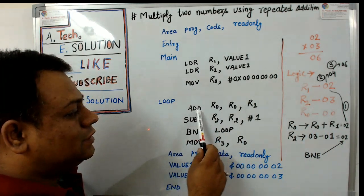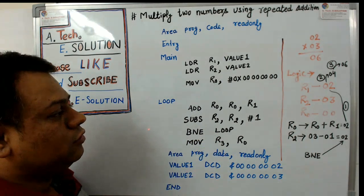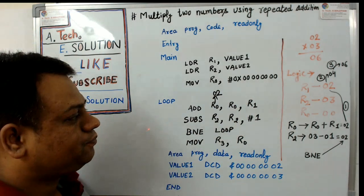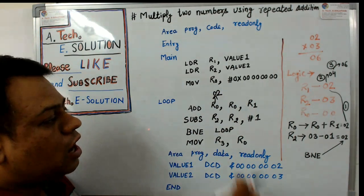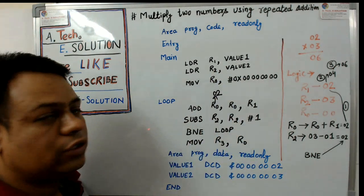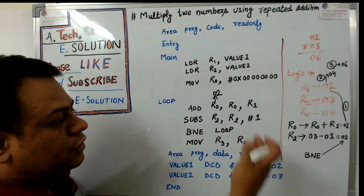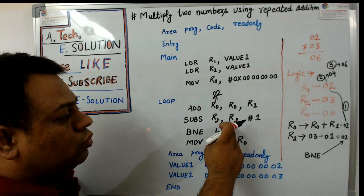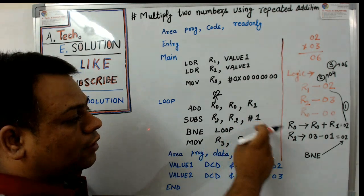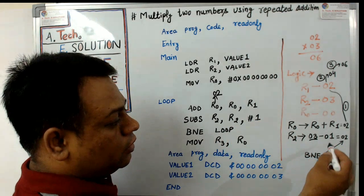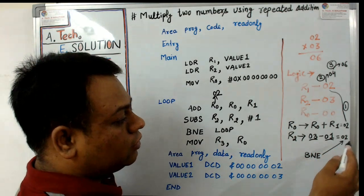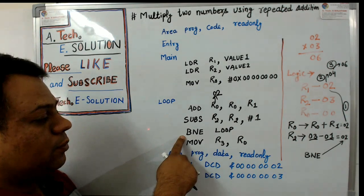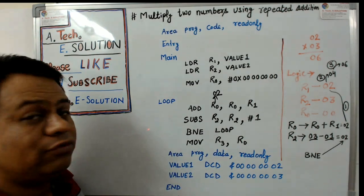So after this instruction, r0 contains the value 0x02. After that, r2 is used as a counter. It is decremented by one — the #1 represents r2 minus 1. r2 contained the value 0x03, which is subtracted by 1, giving a result of 0x02.